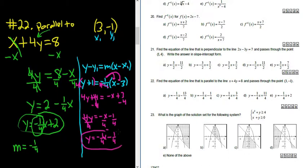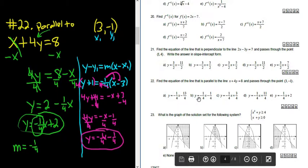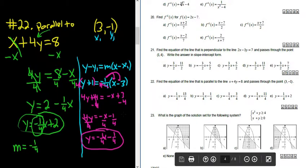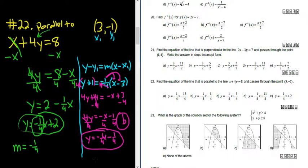Let's see if that's one of the choices. Negative 1 fourth x minus 1 fourth. Yep, it is. It's B. So the answer is B. I hope that helps.